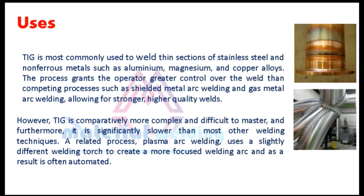TIG welding is most commonly used to weld thin sections of stainless steel and non-ferrous metals such as aluminum, magnesium, and copper alloys. The process grants the operator greater control over the weld than competing processes such as shielded metal arc welding and gas metal arc welding, allowing for stronger, higher quality welds. However, TIG is comparatively more complex and difficult to master, and furthermore, it is significantly slower than most other welding techniques.